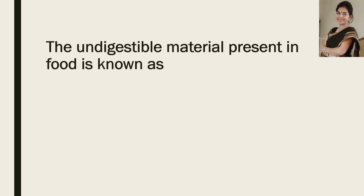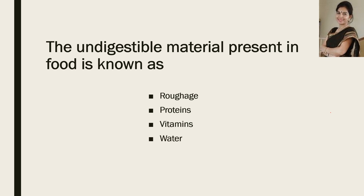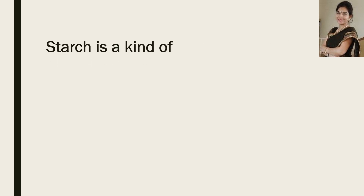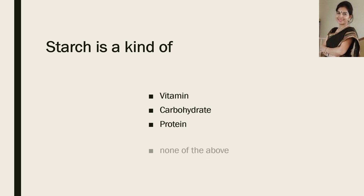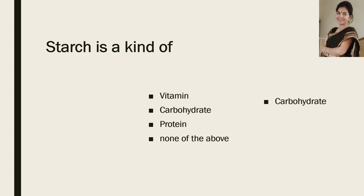Now the next question: the undigestible material present in food is known as? The options are roughage, proteins, vitamins, or water. And the correct answer is roughage. Now, starch is a kind of vitamin, carbohydrate, protein, or none of the above? And the correct answer is carbohydrate.